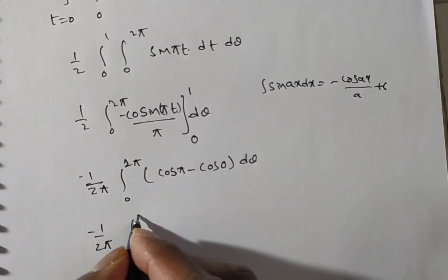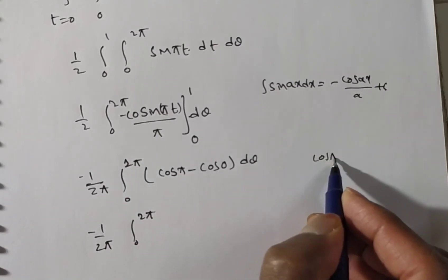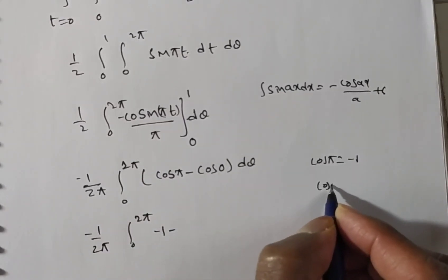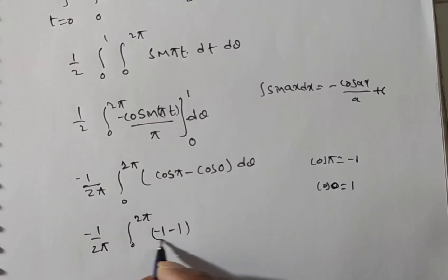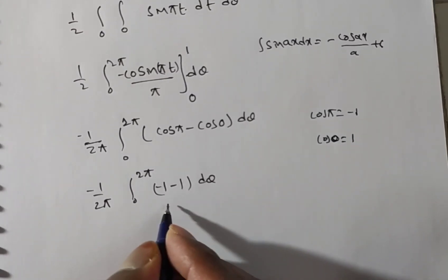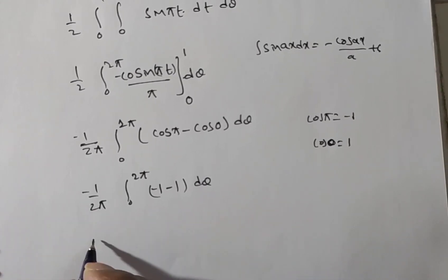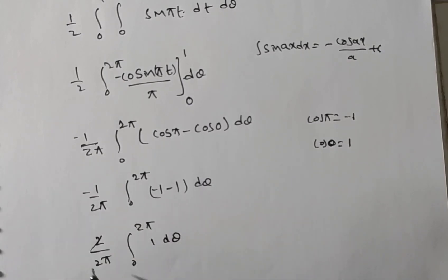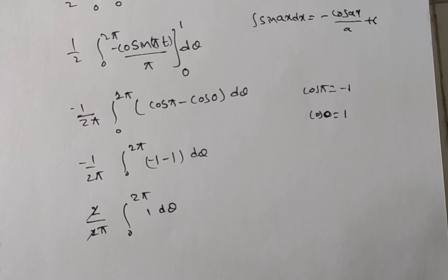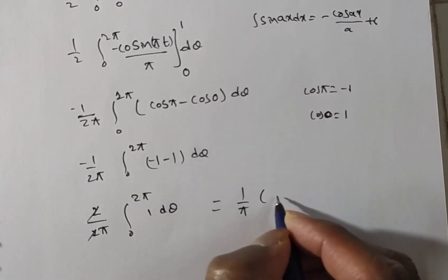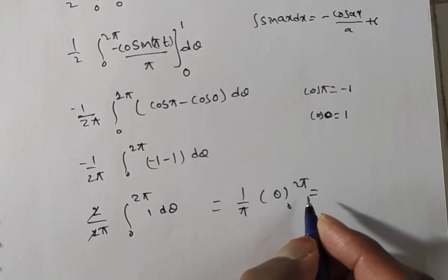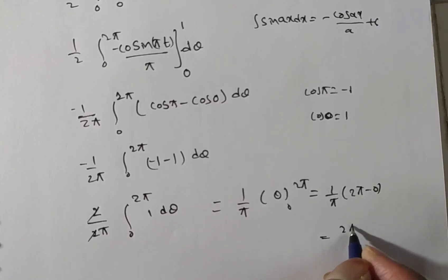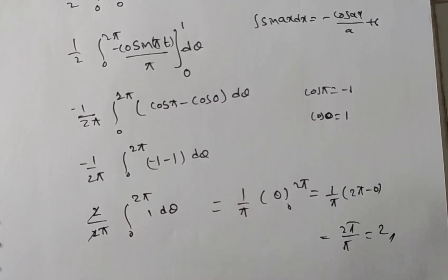We use cos(nπ) = (−1)ⁿ, so cos(π) = −1, and cos(0) = 1. The expression becomes: −(−1) − (−1) = 1 − (−1) = wait — evaluating: [−cos(π) + cos(0)] = [−(−1) + 1] = 1 + 1 = 2. So we have (−1/2π) · 2 · integral from 0 to 2π of dθ = (1/π) · [θ] from 0 to 2π = (1/π) · 2π = 2. The answer is 2.